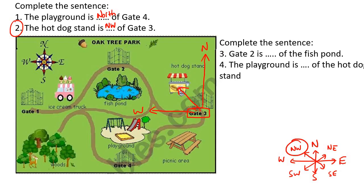Question three says gate number two. So gate number two. There it is. Is what of the fish pond? Well, here's the fish pond. So the gate is north of the fish pond.